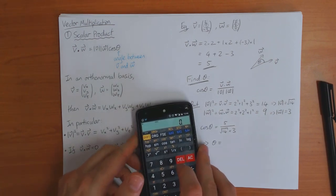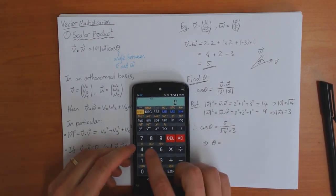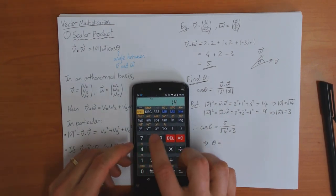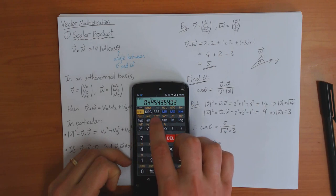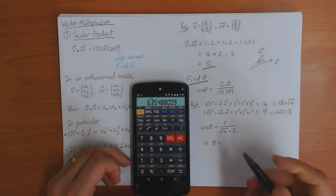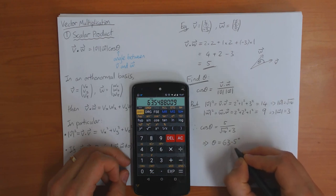Here's my calculator on my phone. So five divided by square root of fourteen divided by three and inverse cos, sixty three point five. So the angle between these two vectors is sixty three point five degrees.